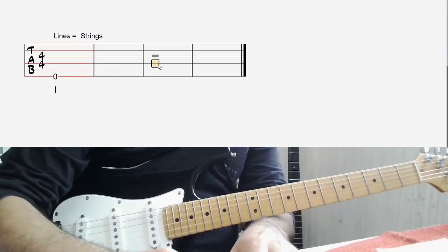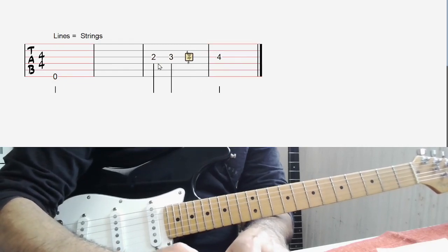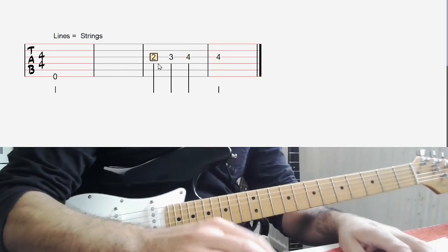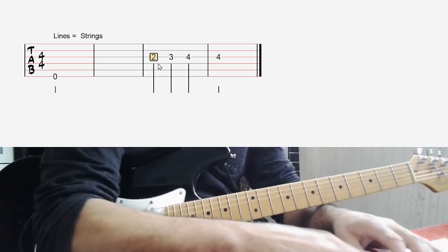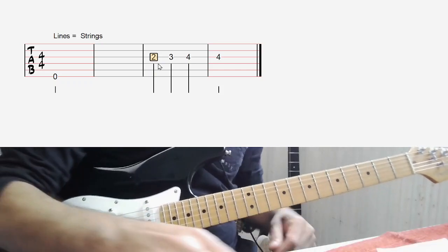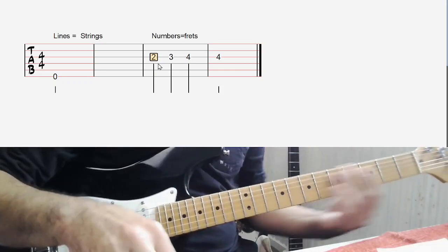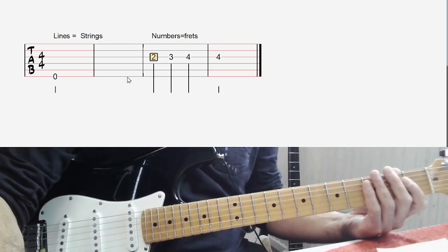And numbers are frets. Frets are these metal lines on the guitar, which give me positions where I'm going to place my fingers. But let's start with the lines, okay?